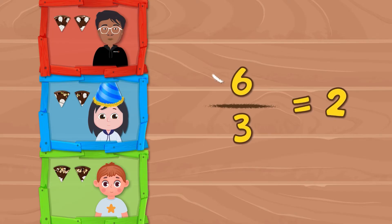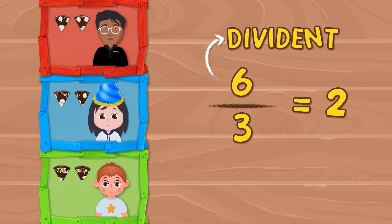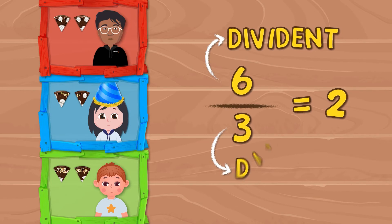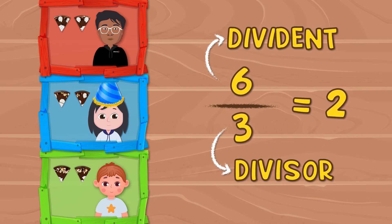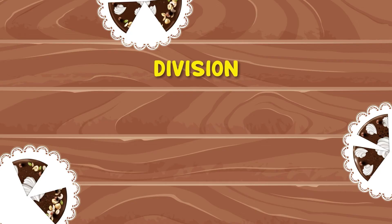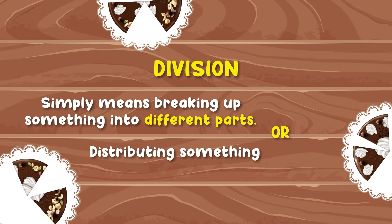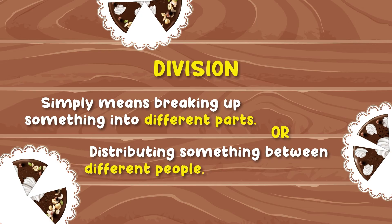We distributed 6 slices of cake among 3 kids. Number 6 here is called the dividend, as it is divided among kids. And number 3 here will be the divisor — the number of groups we are dividing it into. Division simply means breaking up something into different parts or distributing something between different people, groups or places.